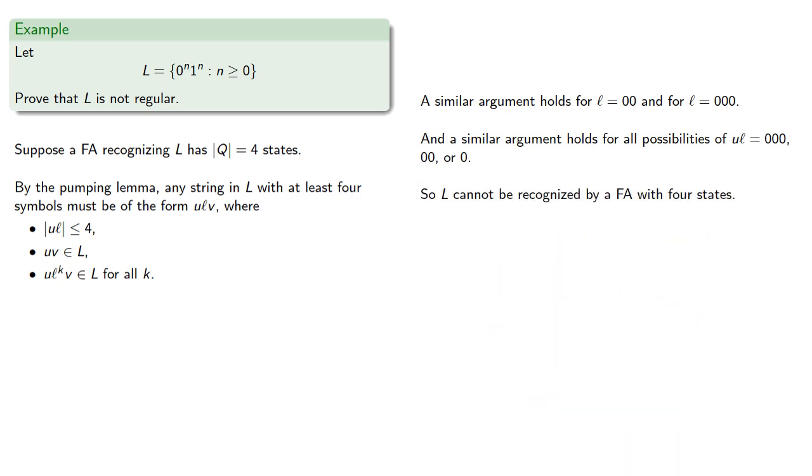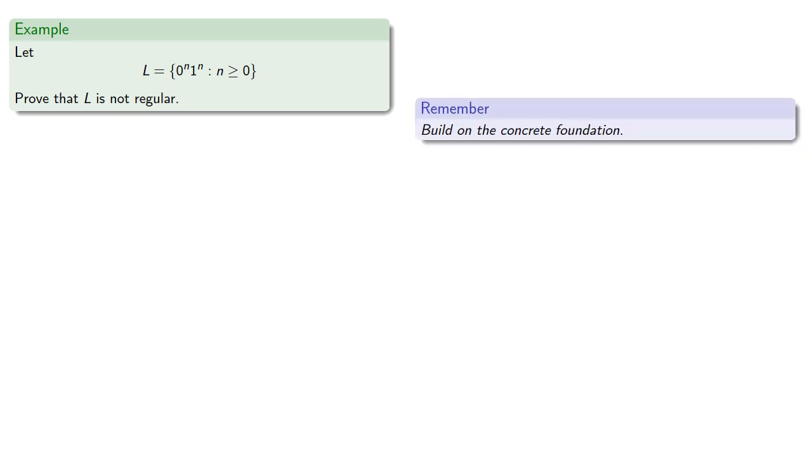So L cannot be recognized by a finite automaton with four states. Now, this actually proves that L can't be recognized by a finite automaton with four states, but it doesn't quite prove that L is not regular, since maybe there's a different finite automaton that will work. So let's build on a concrete foundation.